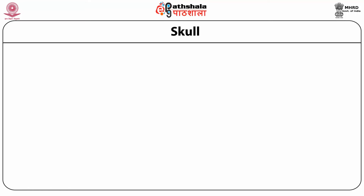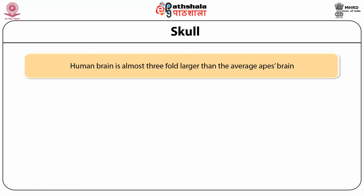The size of the human brain increased during the course of evolution and became much larger than any of the living apes, ranging from 1300 cc to 1450 cc. The brain of the orangutan ranges from 365 cc to 425 cc, that of the chimpanzee between 400 cc to 500 cc, and that of the gorilla also between 400 cc to 500 cc. Thus, in humans, the brain size is almost 3 to 4 times larger than the average ape brain size.